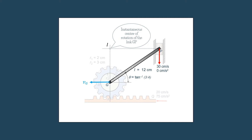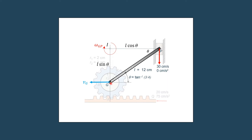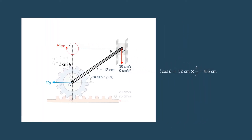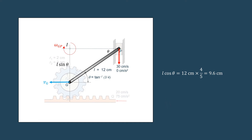Knowing point I and the velocity of point P, we can obtain the angular velocity of the link GP. Since the velocity of point P is directed downward, the direction of the angular velocity will be clockwise, or negative k. We have angle theta here and there. With length L = 12 cm, the distance from I to P is L cos θ, and the vertical distance from I to G is L sin θ. L cos θ equals 9.6 cm and L sin θ equals 7.2 cm.